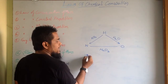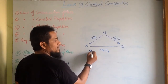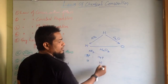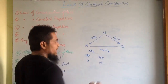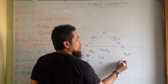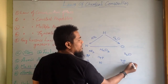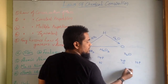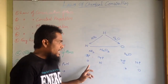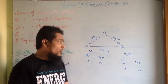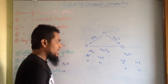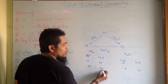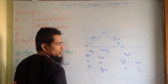In NH3, three parts of hydrogen are combining with 14 parts of nitrogen. In H2O, two parts of hydrogen are combining with 16 parts of oxygen. Now, if we calculate for one part of hydrogen, how many parts of nitrogen are combining?